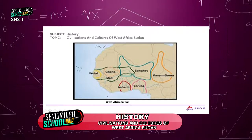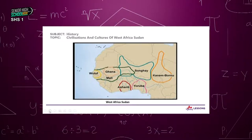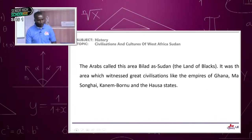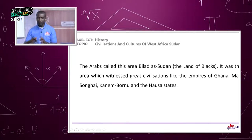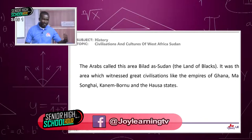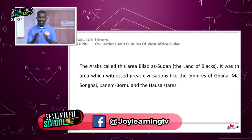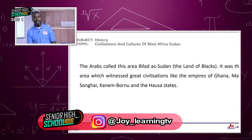Our discussion is centered around this map. The Arabs called this area Belad-As-Sudan — the land of blacks — referring to the area from the west coast of West Africa east to Lake Chad.